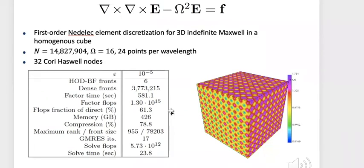How does the effectiveness of the butterfly for differential equation solvers scale with the order of the solver — for example, with high-order discontinuous Galerkin methods? We haven't really tried high-order methods, but the example shown uses matrices from the MFEM software, which supports a variety of discretization elements and basis function orders. From preliminary results, we have to use very high accuracy in the butterfly compression because the problem is highly indefinite and the sparse system is very ill-conditioned.